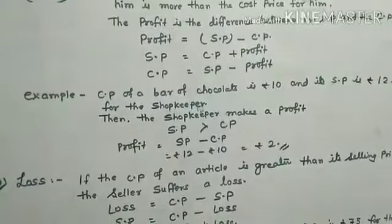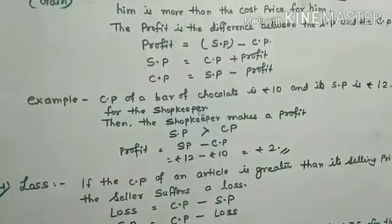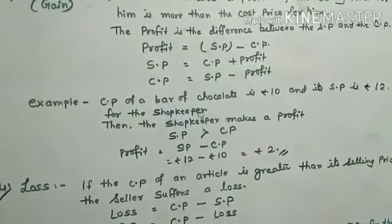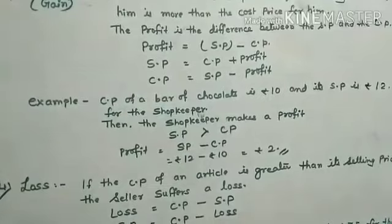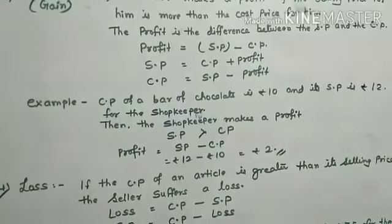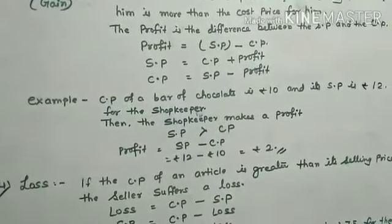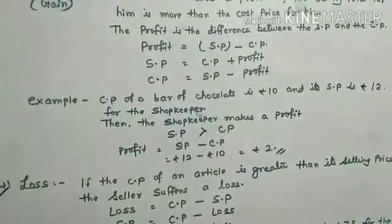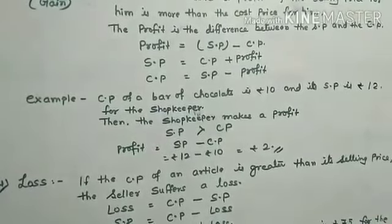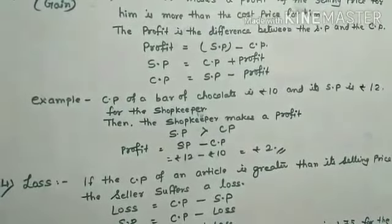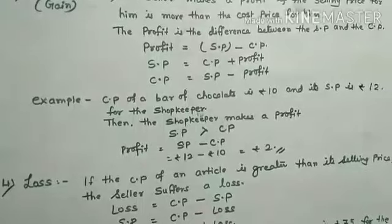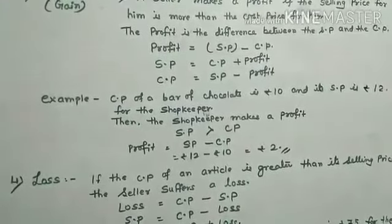For example: the CP of a bar of chocolate is ₹10 and the selling price is ₹12 for the shopkeeper. Since the selling price is greater than the cost price, the shopkeeper makes a profit. Profit = 12 − 10 = ₹2.